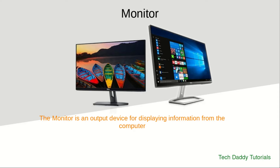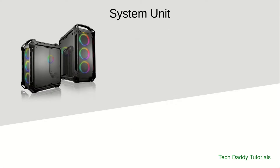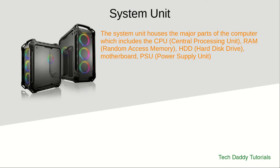Let's discuss each one now, starting with the monitor. The monitor is an output device for displaying information from the computer. This information includes files, programs, and in this video you can see information such as photos displaying and menus from Microsoft Windows — those are some examples.